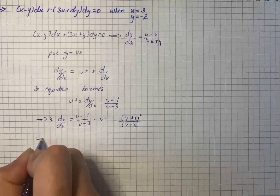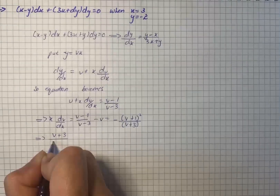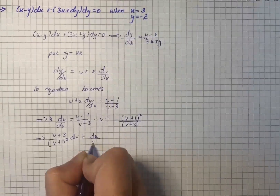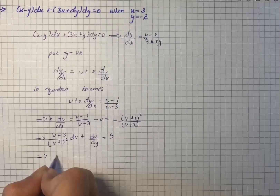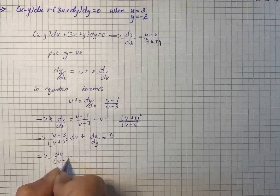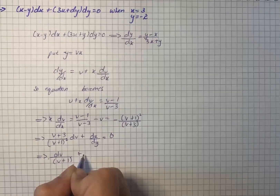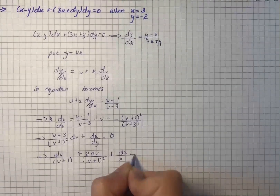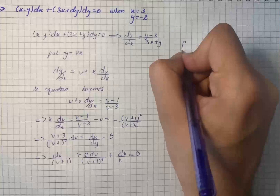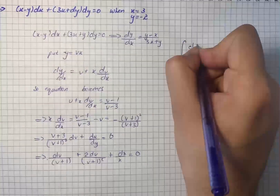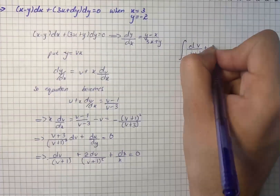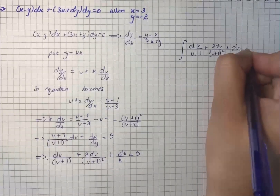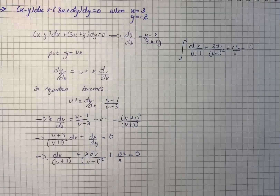We write it as (v plus 3) over (v plus 1) squared times dv plus dx over x equals 0. On further simplification we have 1 over (v plus 1) dv plus 1 over (v plus 1) squared dv plus dx over x equals 0, which integrates to give our equation.